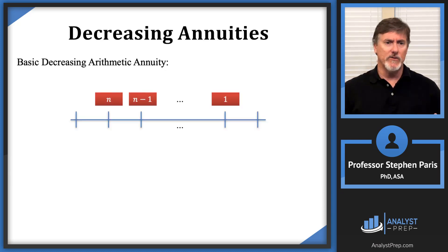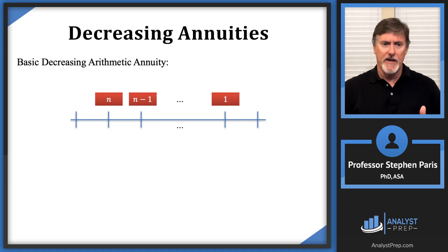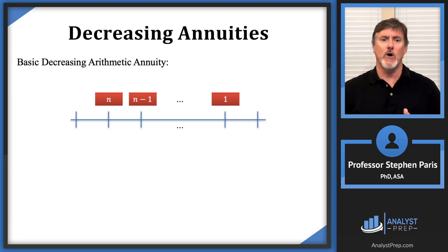Our basic decreasing arithmetic annuity is going to look like this. An in-payment annuity — the first payment is N, then N minus one, N minus two, all the way down to a final payment of one.